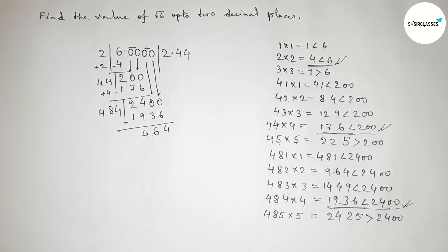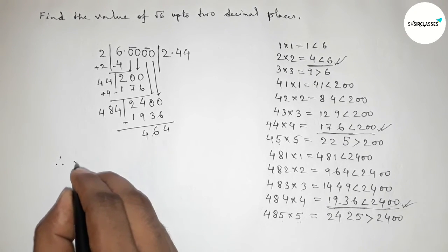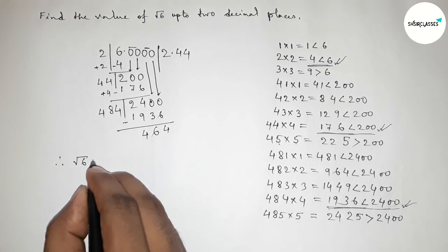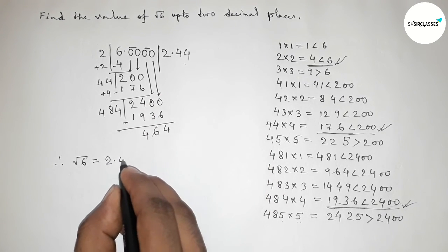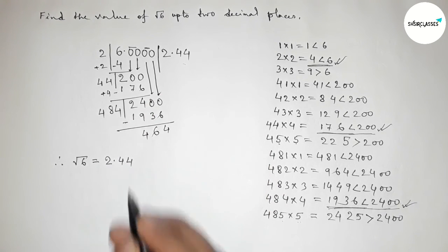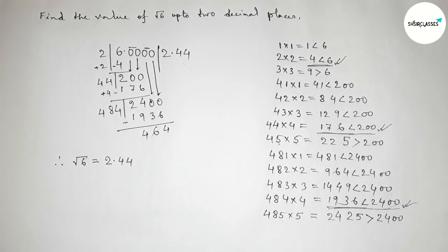Subtracting, we get the remainder. So the value of root 6 up to 2 decimal places is 2.44. That's all — thanks for watching. If this video is helpful to you, please share it with your friends.